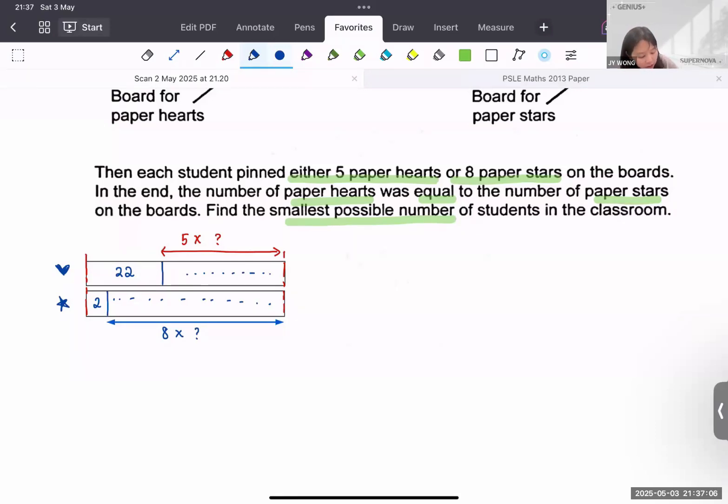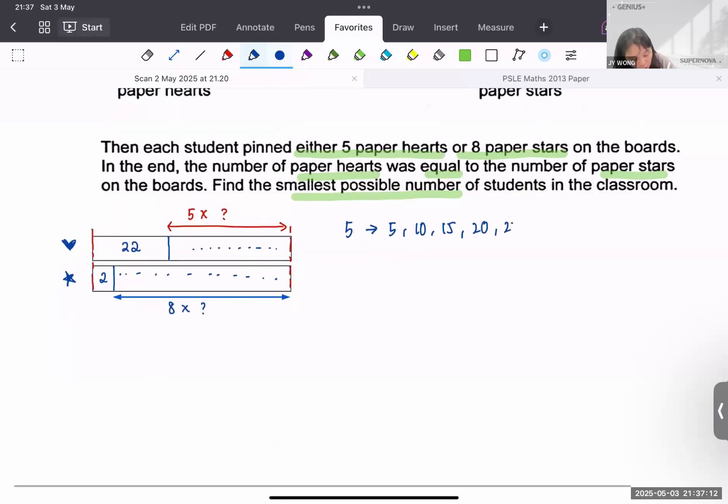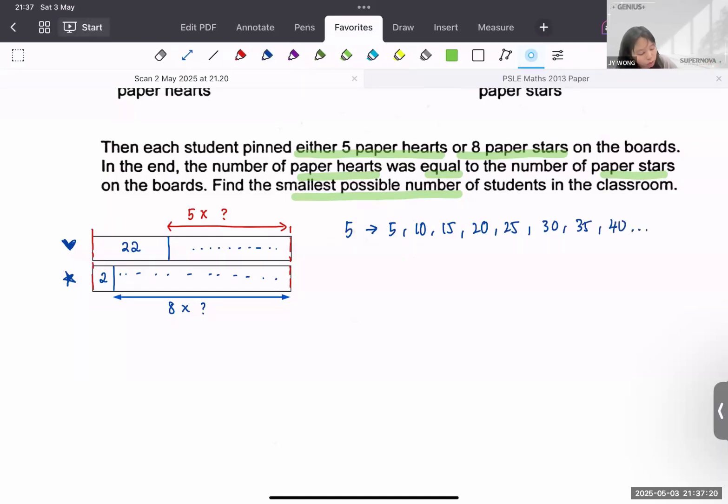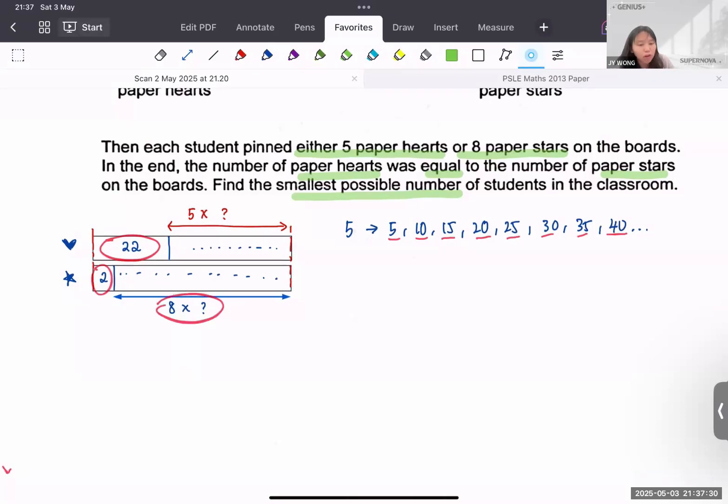So what you can do is that you can find 5 times table first. 5, 10, 15, 20, 25, 30, 35, 40. You can go on, but we can stop here first. And then what do we want to do? If you add 22 to the multiples of 5, it should give you a total that is the same as when you take 2 plus multiples of 8.